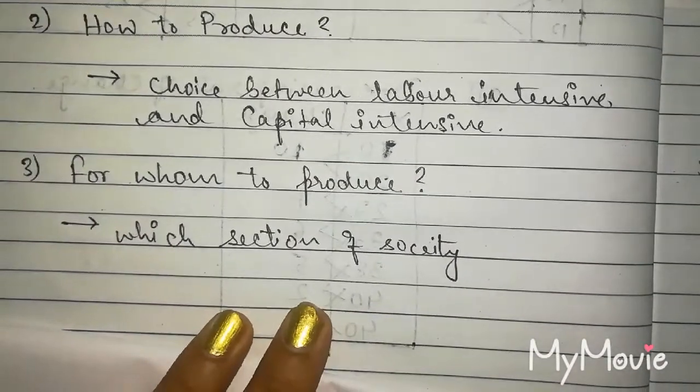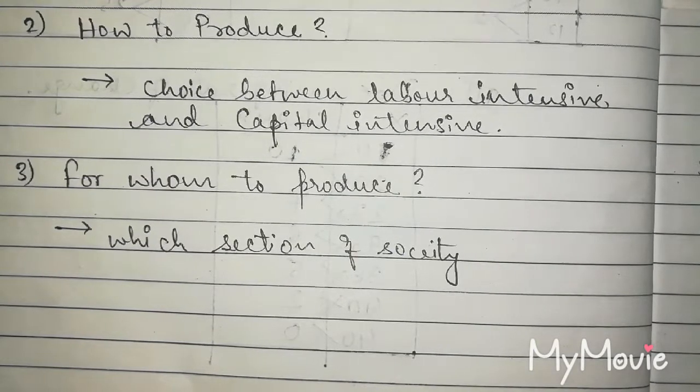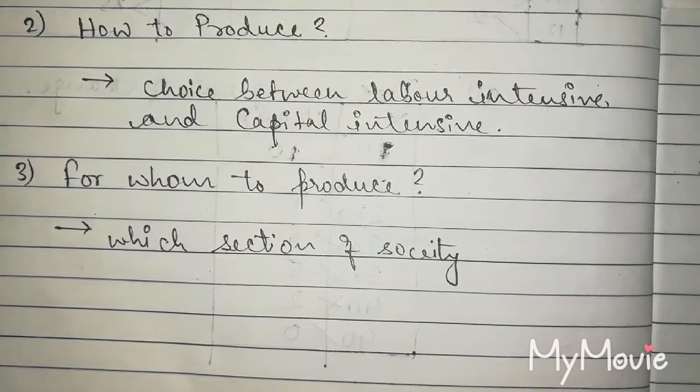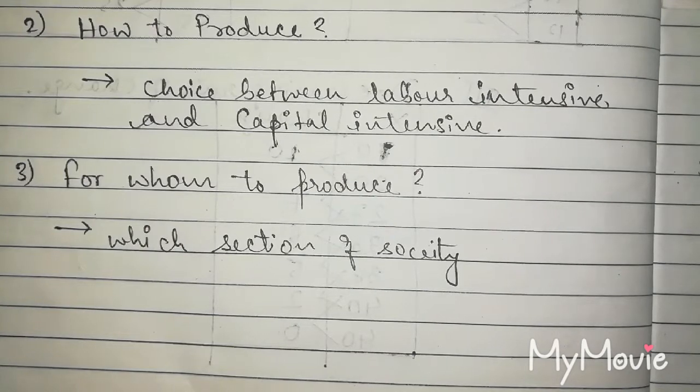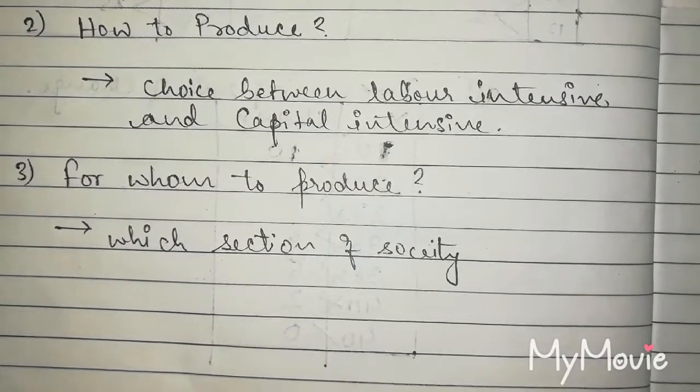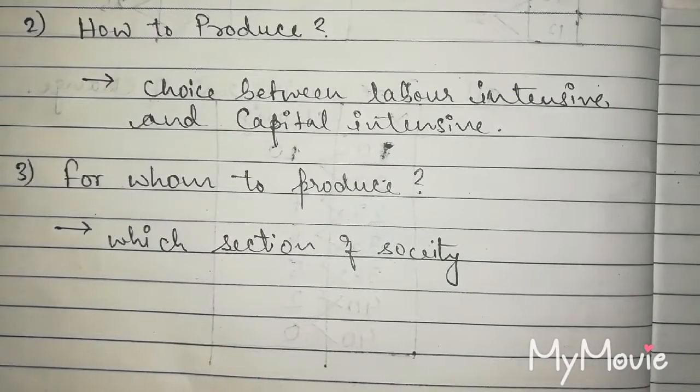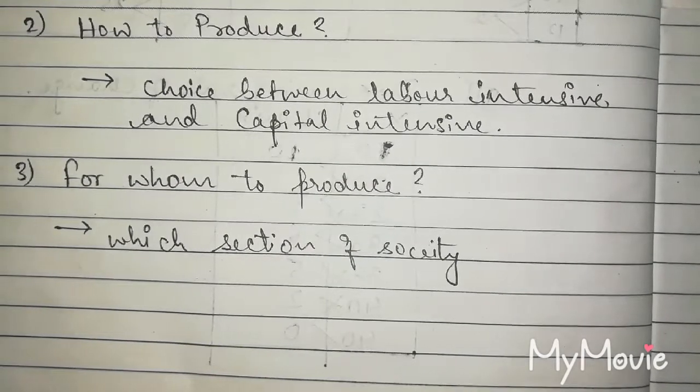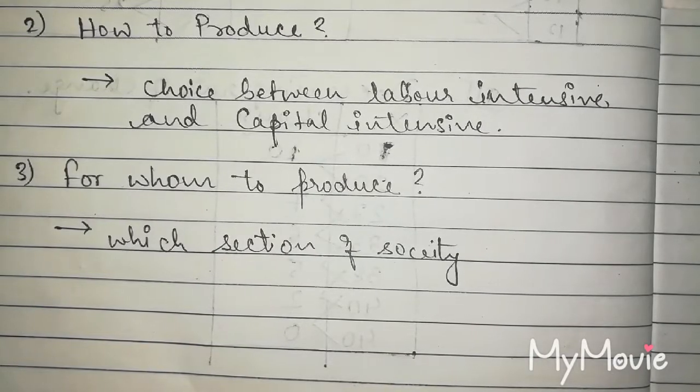For whom to produce? For whom we are producing the commodity is in which section of the society we want to sell our product. It can be weaker section of the society, middle section of the society, or richer section of the society. For example, Tata launched Nano for middle and lower middle section society so that everybody can avail this facility. Similarly, Jio was launched for the economically backward class people so that everybody can have phone. And that is the central problems of economy: what to produce, for whom to produce, and how to produce.